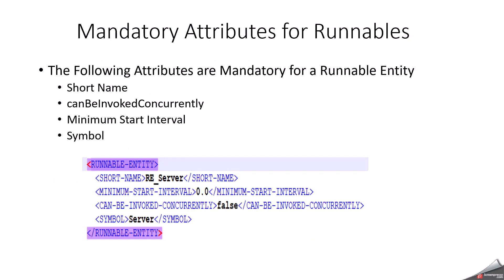What are the mandatory attributes we need to concentrate on when configuring runnables? Basically three: one is canBeInvokedConcurrently, another is minimum start interval, and the third is symbol. The symbol name — the same name we write for the function in C code. What is canBeInvokedConcurrently? This is a boolean attribute. When set to true, the enclosing runnable entity can be invoked concurrently — meaning concurrent invocation of the runnable entity is allowed.